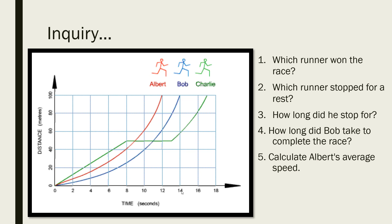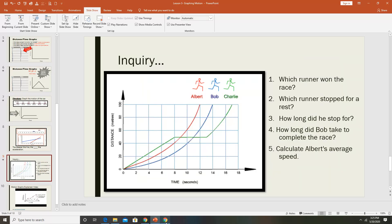Question 5: Calculate Albert's average speed. Total distance divided by total time: 100 ÷ 12 ≈ 8.33 meters per second, meaning Albert covered about 8 meters every second, which is pretty fast. This concludes our graphing motion lesson. Work on the practice provided, and feel free to rewatch the video. Our next lesson will be over acceleration.